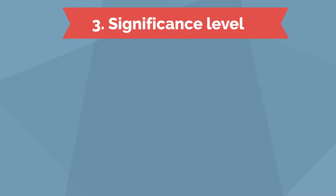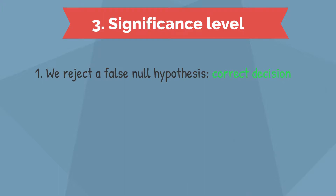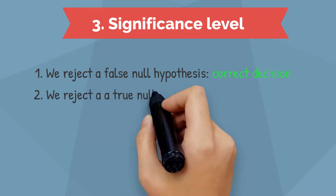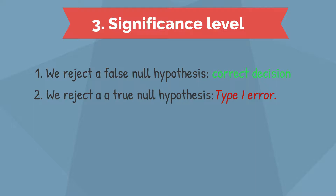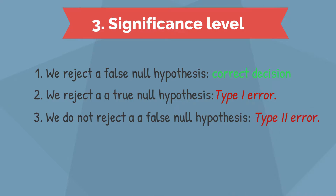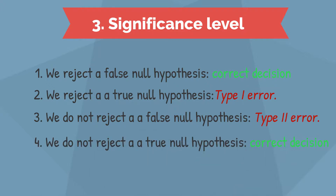There are four possible outcomes when we test the null hypothesis. First, we reject the false null hypothesis — this is the correct decision. Second, we reject the true null hypothesis; in this case we should not be rejecting the null hypothesis but our test statistic suggests rejection. This is called a Type 1 error. Third, we do not reject the false null hypothesis; in this case we should be rejecting the null hypothesis but our test statistic suggests accepting the null — this is a Type 2 error. Finally, we do not reject the true null hypothesis, which is the correct decision.